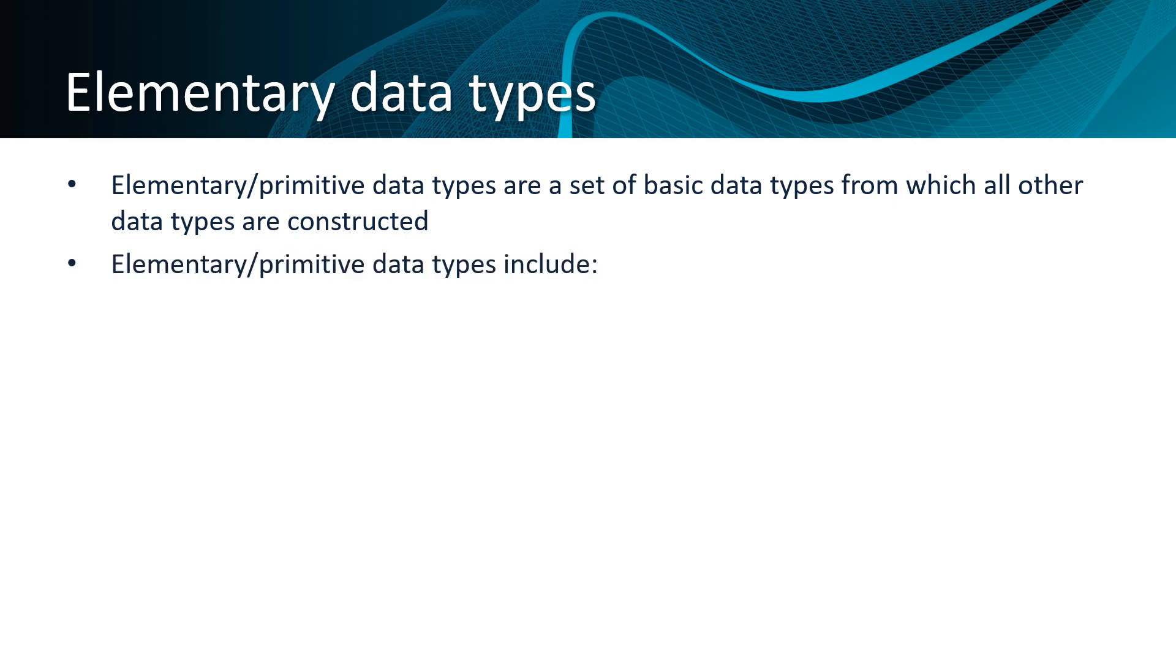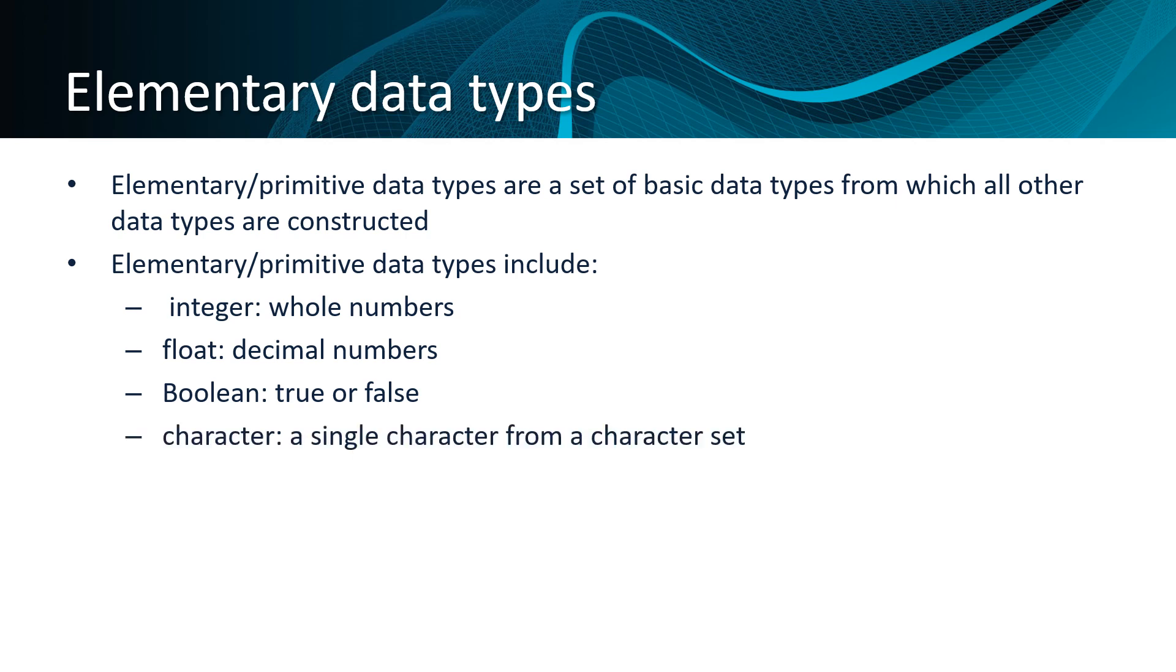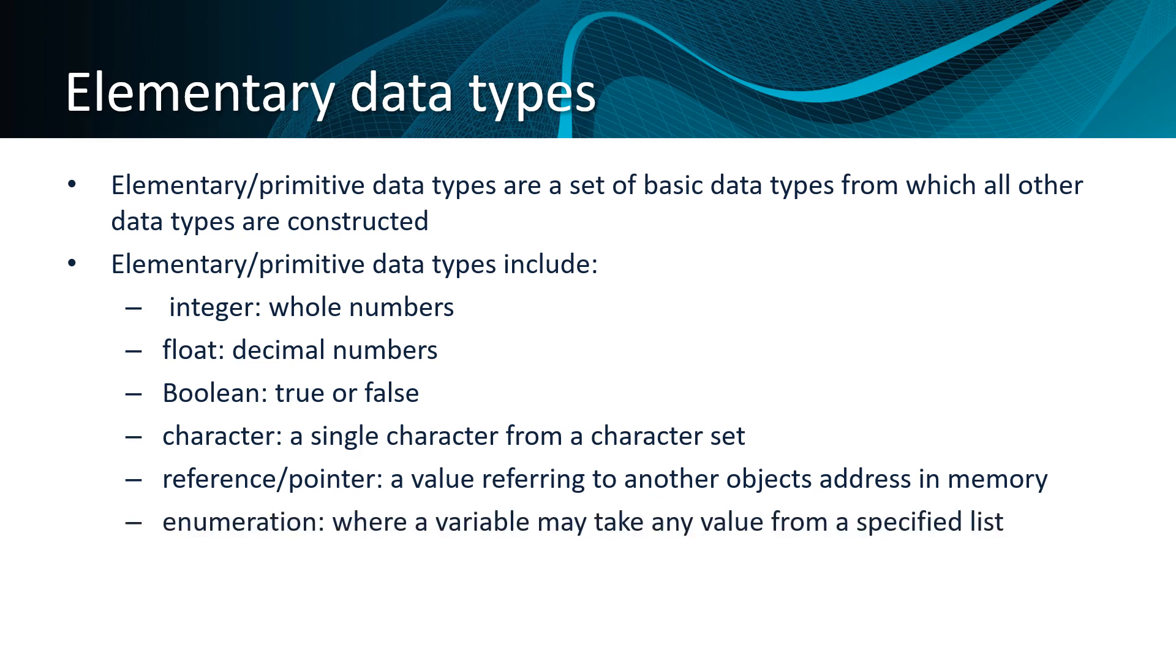Elementary or primitive data types include integers, which are whole numbers; floats, which are decimal numbers; booleans, which can hold a value of either true or false; character, which is a single character from a character set; reference, sometimes known as pointer, which is a value referring to another object's address in memory; or enumeration, where a variable may take any value from a specified list.